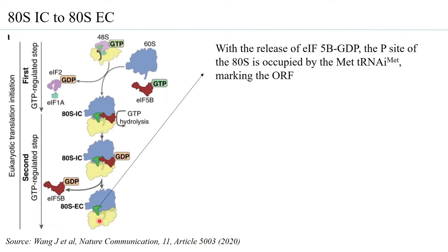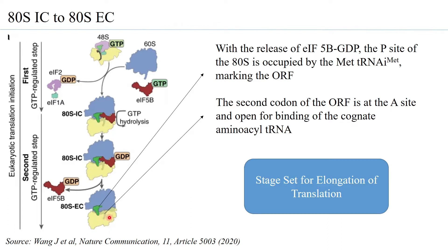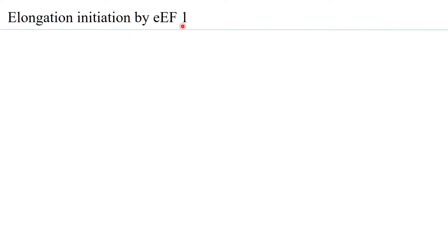At the P site is present the initiator tRNA carrying the initiator methionine, and the A site is completely free for a cognate tRNA to come and bind. In the open reading frame, the start codon is associated with the initiator tRNA, and the next codon is present in the A site, where it can be read by a cognate tRNA. The stage is now set for elongation of translation. Let us look at how elongation factor 1 comes into play.